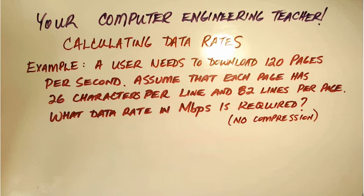So let's take a look at an example. We're going to say the user needs to download 120 pages of text per second, and we're going to assume that each page has 26 characters per line and 82 lines per page. What's the data rate in megabits per second that we're going to need in order to make this happen? We're going to assume that there's no compression to keep our calculations simple.